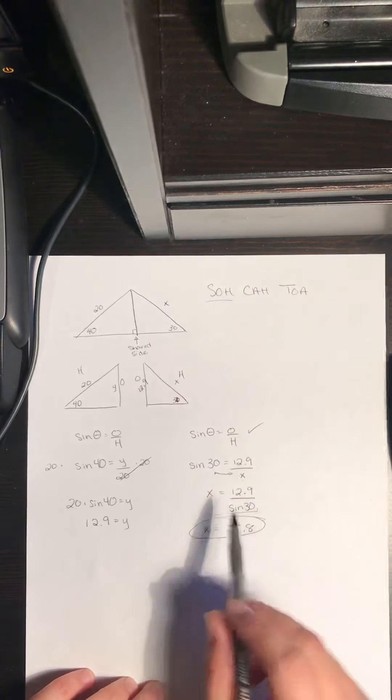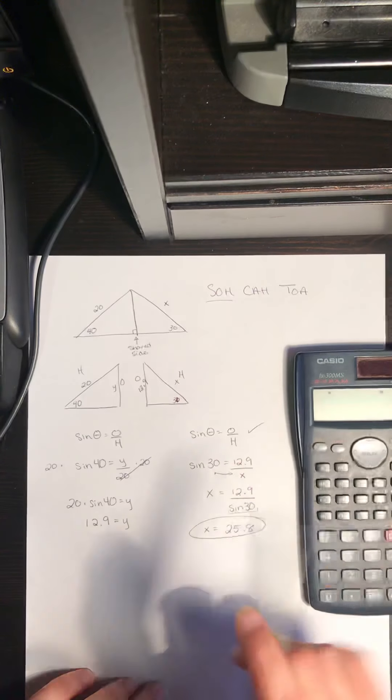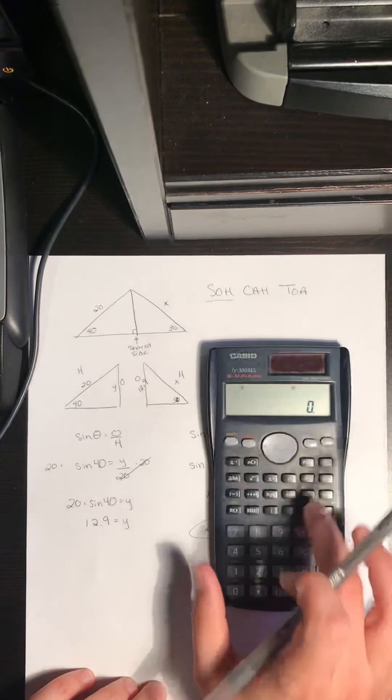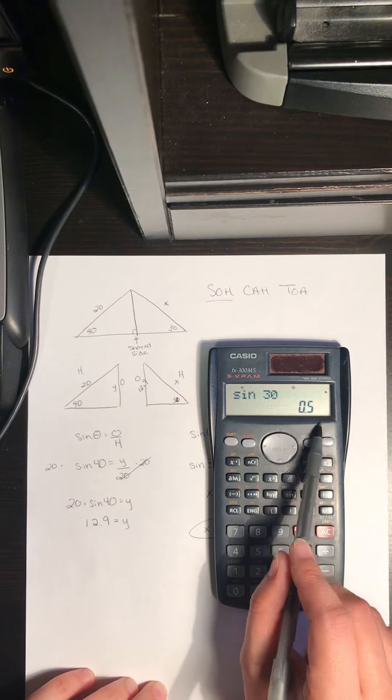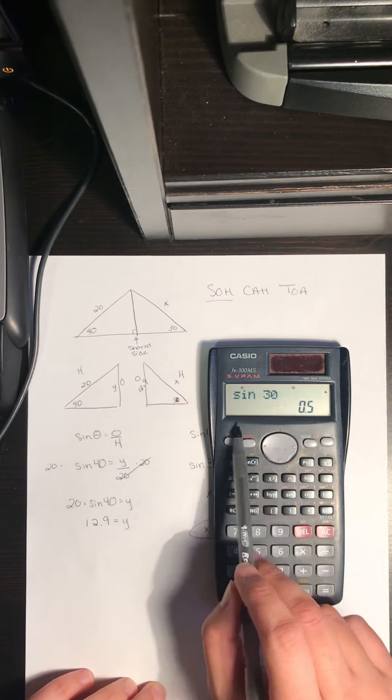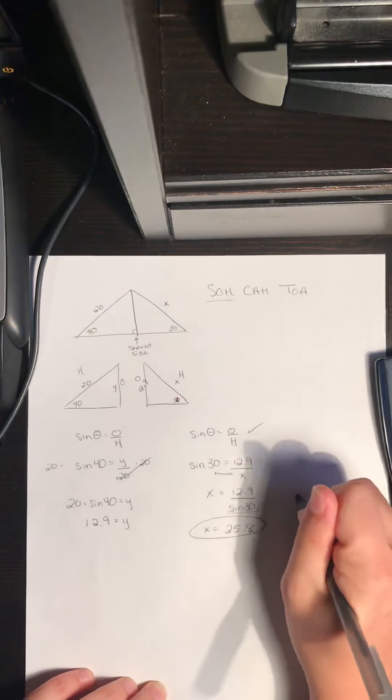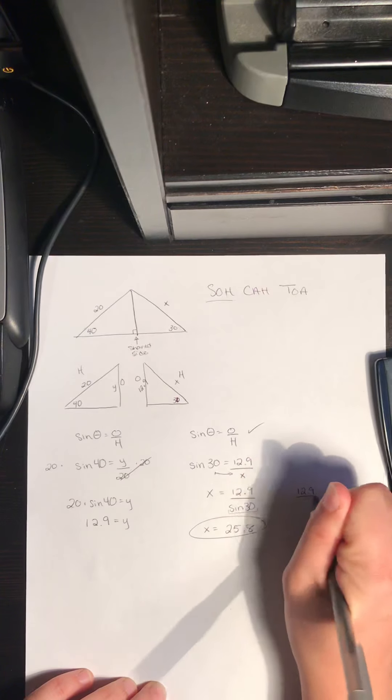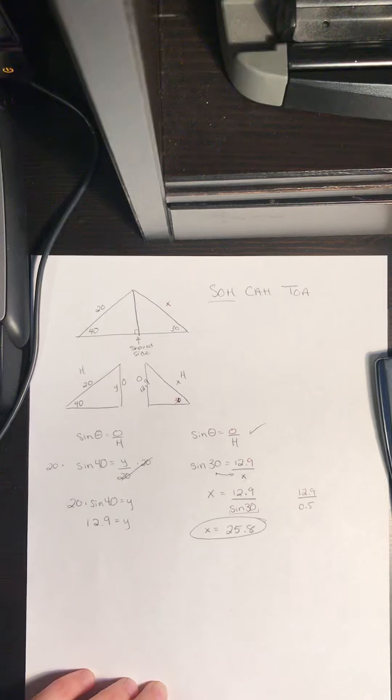If you don't have a calculator with that input, you would need to figure out what sine 30 is first. So you would type 30 sine. And typically, it's a really long decimal. Sine 30 is just point five. But typically, with an angle, you'd have a really long decimal and you'd have to write that all out. So you'd have to write 12.9 divided by typically what the whole decimal is because you can't round it.